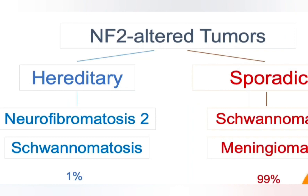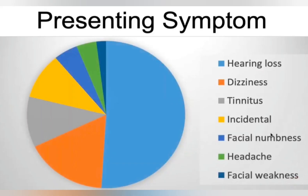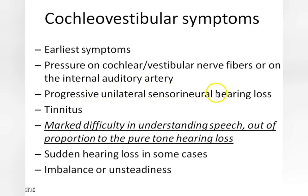The presenting symptoms — the cochleo-vestibular bundle is involved first in the internal auditory canal, so early presenting symptoms involve the vestibular nerve, cochlear nerve, and facial nerve. There is a marked difficulty in understanding speech out of proportion to the PTA. This is classical for vestibular schwannomas: although patients may hear the sound, the speech discrimination is quite poor.